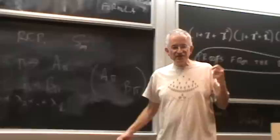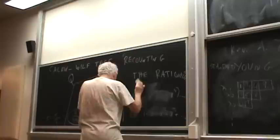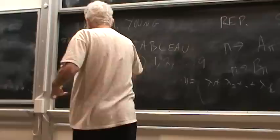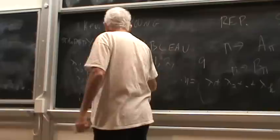The question is: how many are they? There was an ugly formula due to Young and Frobenius, but then in the early 50s Frame, Robinson, and Thrall found a beautiful formula.